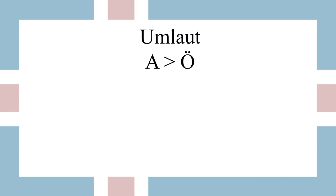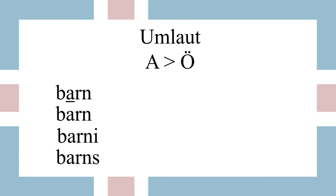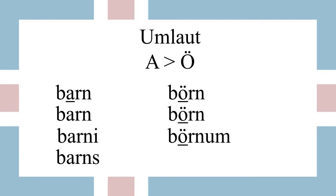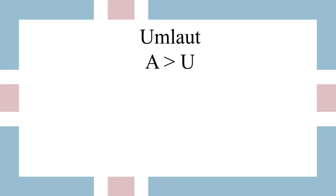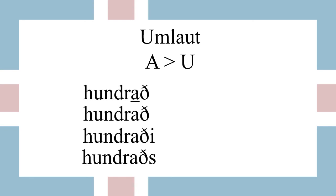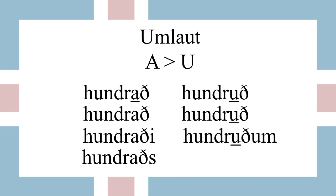Now let's talk a little more about umlaut, which is a vowel shift — when one vowel turns into another. We'll often see an A turning into an Ö, like we just did in hjarta. This can also happen with regular neuter nouns, the ones that don't end in A. The example we'll look at is barn, which means child. The singular form looks normal, however when we move to the neuter plural form, if A is the main vowel in the stem, then it turns into Ö in the plural. So we have barn in nominative, barn in accusative, börnum in dative, and barna in genitive. A can also turn into U, as in the word hundrað, which means hundred — which looks normal in singular, but in plural becomes hundruð, hundruð, hundruðum, and hundruða.